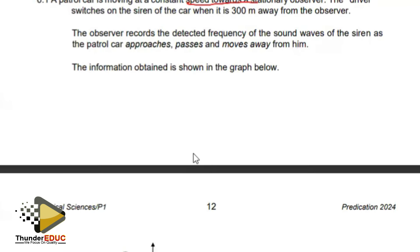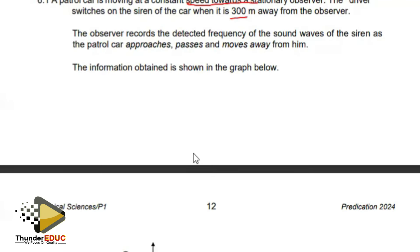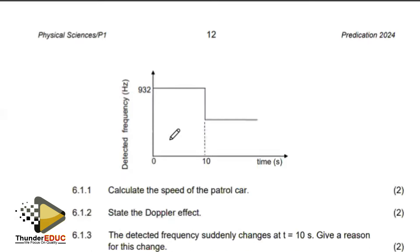The driver switches on the siren when it is 300 meters away from the observer. The observer records the detected sound waves of the siren as the patrol car approaches, passes, and moves away. The information is given in the graph below.